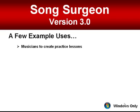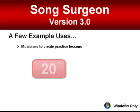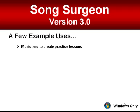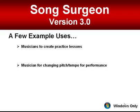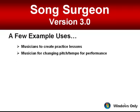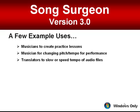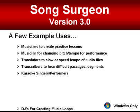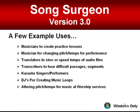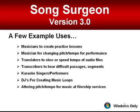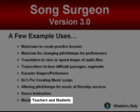Musicians who use it in a practice setting are probably the most common users — at last count there were more than 20 different instrument types represented: guitar, drums, keyboard, violin, clarinet, trumpet, sax, harmonica, and more. Another common use is making small pitch or tempo changes that are then saved, exported, and used in a performance setting. Translators and transcribers use SongSurgeon to slow down and repeat difficult passages. Karaoke singers and performers use it, as do DJs to create music loops. It's used in churches to change pitch or tempo of worship music, by dance instructors to slow the tempo so students can learn at a slower pace first, and of course by both teachers and students.